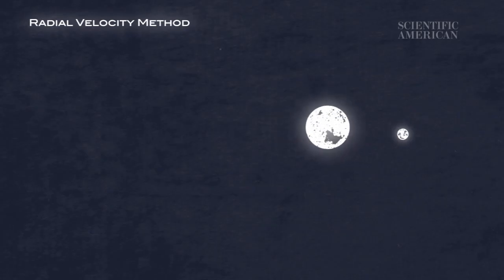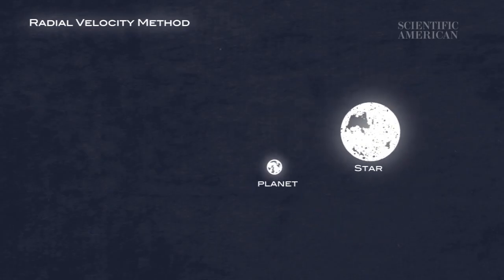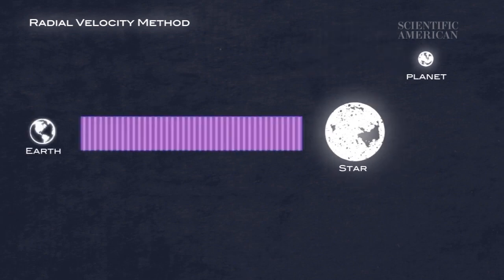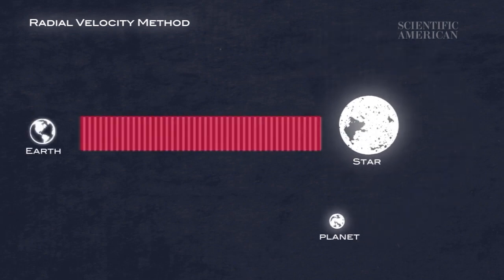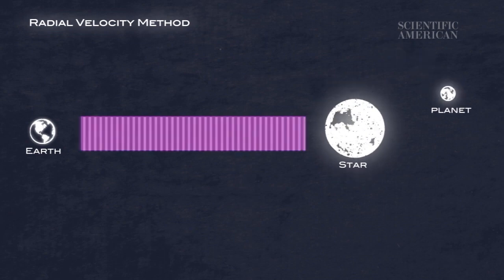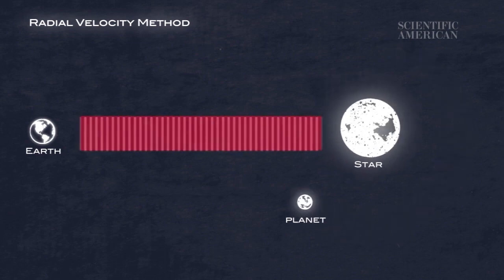For example, many an exoplanet has been found by the so-called radial velocity method. This method detects the small gravitational pull that planets exert on their neighboring stars. The star's movement changes its color, making the light bluer as the star moves toward Earth and redder as it recedes away. Astronomers detect unseen planets by measuring these subtle changes in starlight, which we call the Doppler effect.